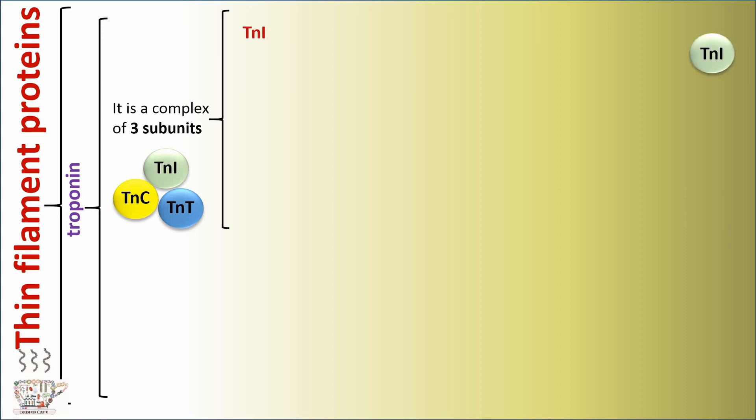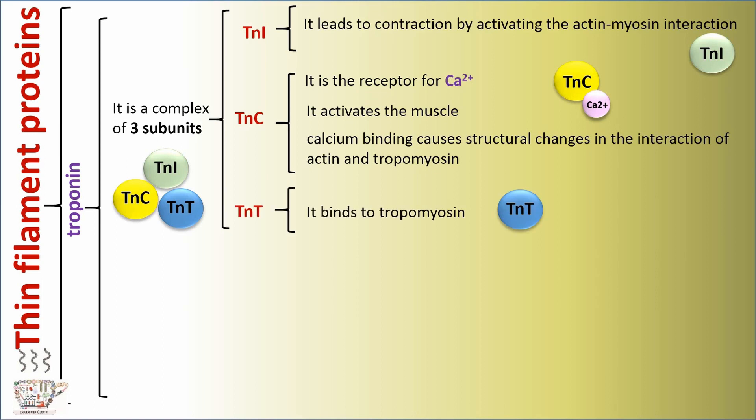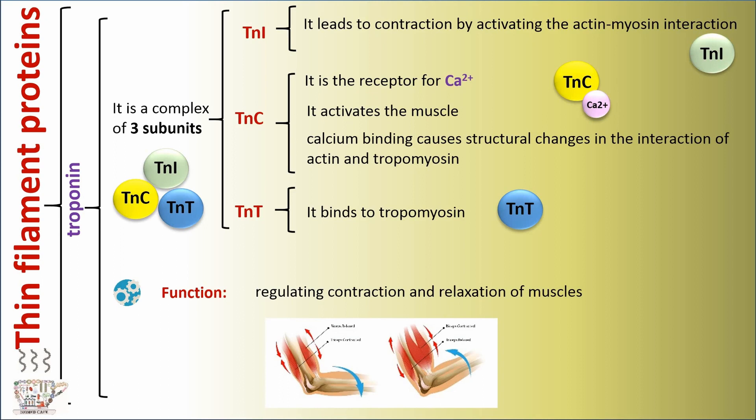The third protein of thin filaments is troponin. It's a complex of three subunits. The first subunit is TNI, which leads to contraction by activating the actin-myosin interaction. Another subunit is TNC, which is a receptor for calcium and activates the muscle. Calcium binding causes structural changes in the interaction of actin and tropomyosin. And TNT binds to tropomyosin. Troponin plays a role in regulating contraction and relaxation of muscles.